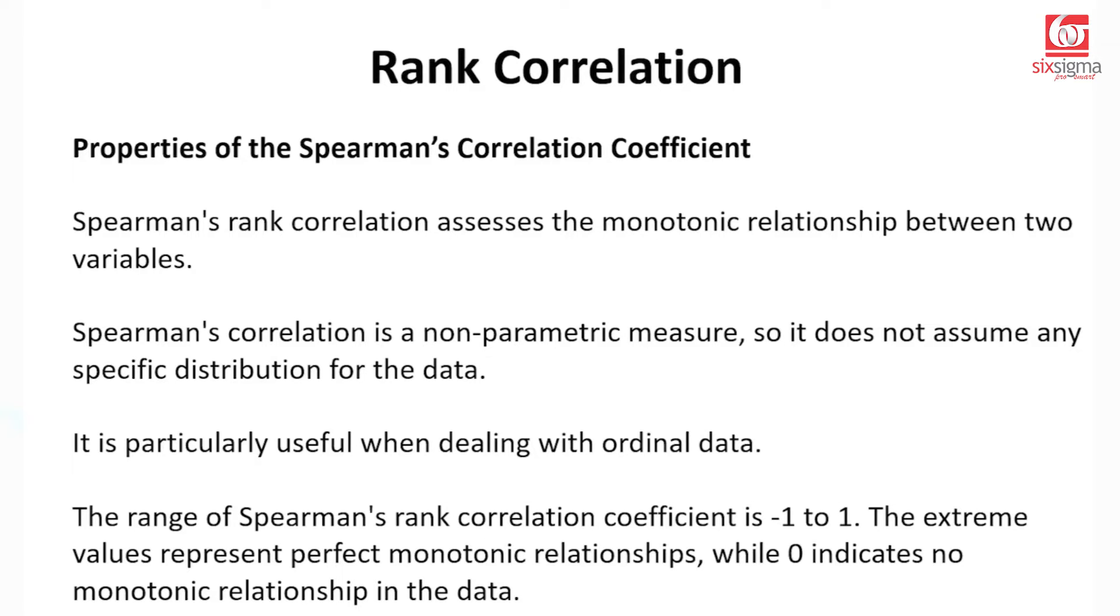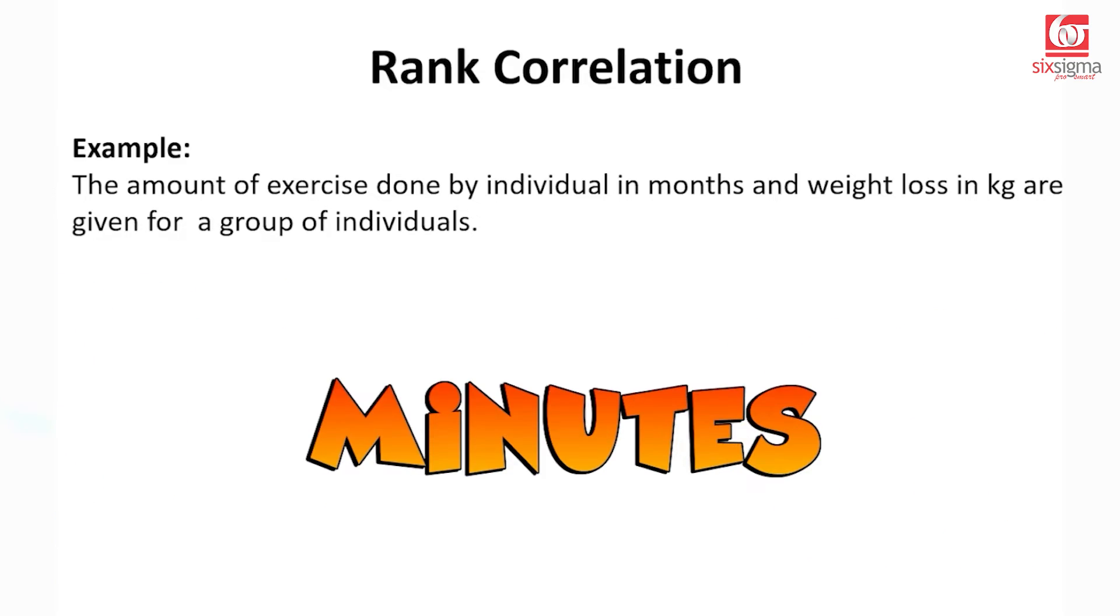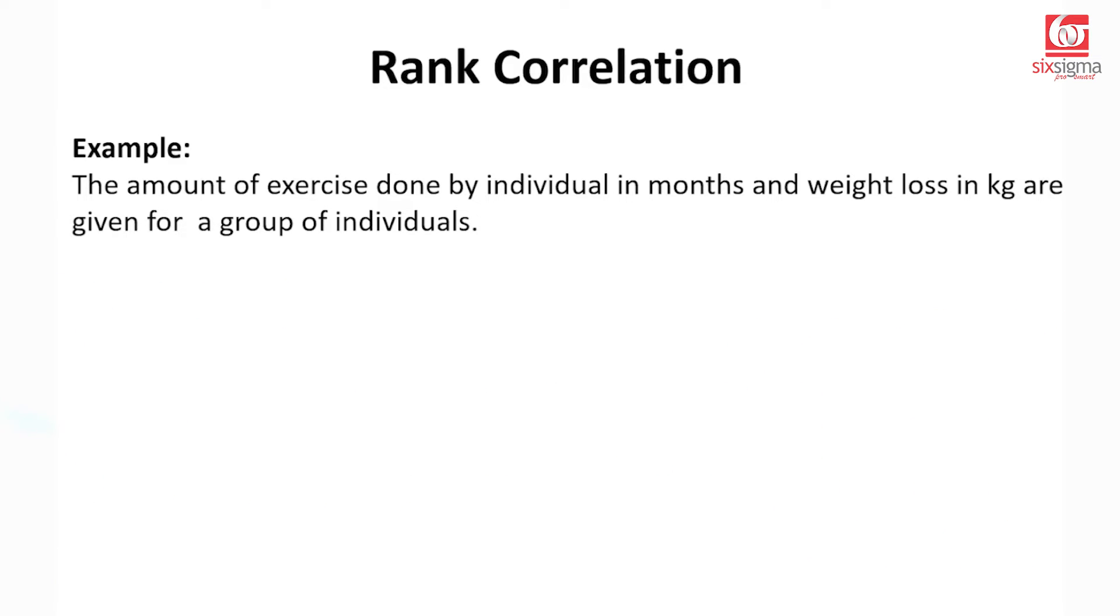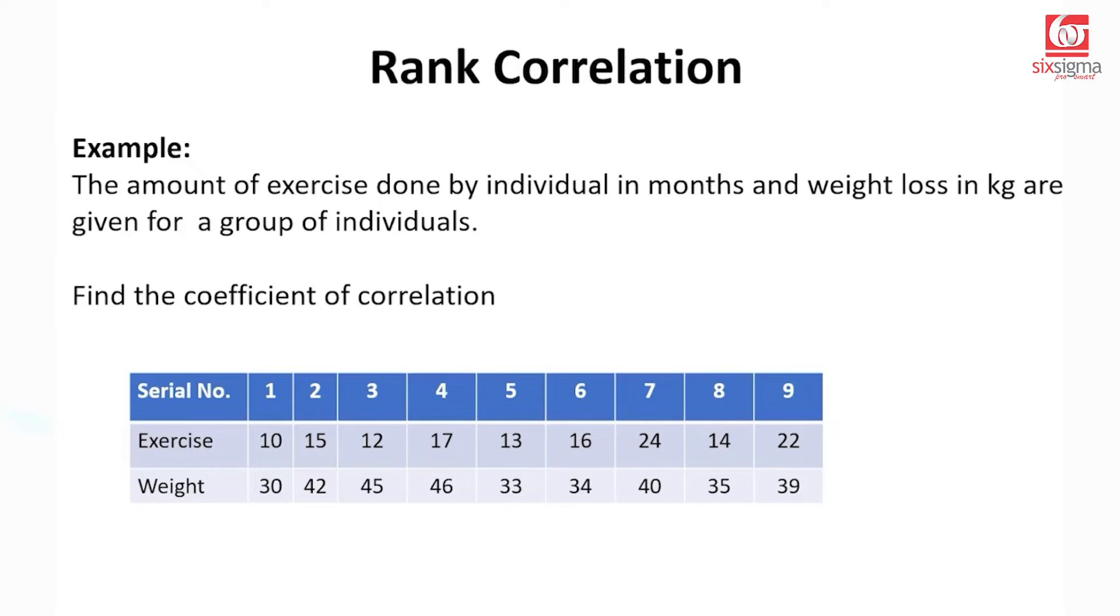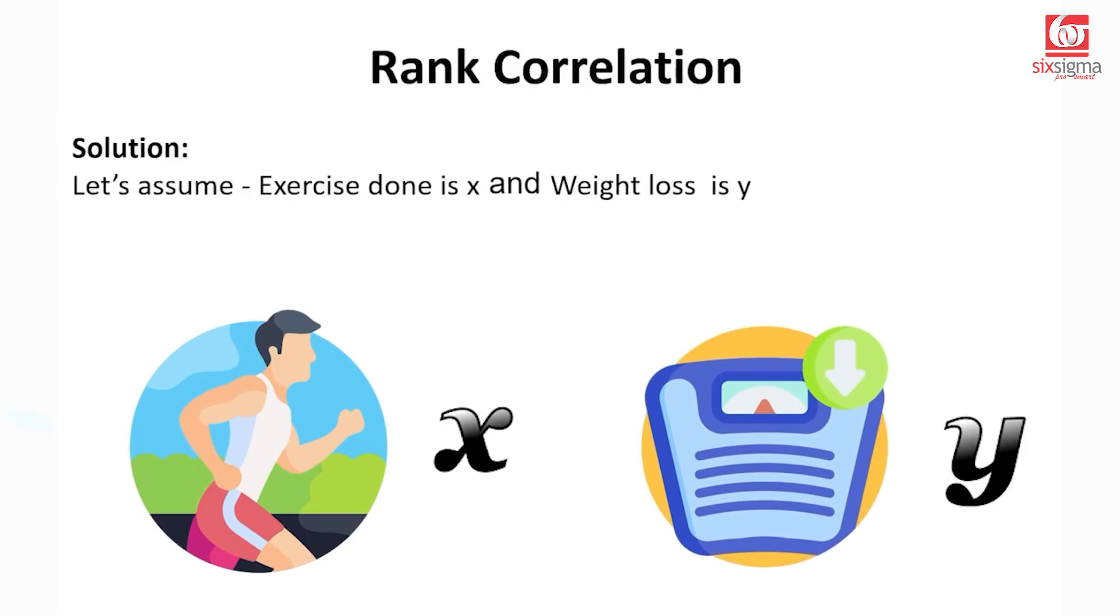Next, we will take an example problem which we'll try to solve manually, and then we'll solve the same problem very easily in Python. Let's say we have to find a relationship between two variables. One is the exercise done, and the other is the weight loss. We could have captured this data in minutes for exercise done and weight loss in kilograms. Let's get some data. We have just nine paired observations, and we will now perform calculations. Let's assume that exercise done is the x variable and weight loss is the y variable.